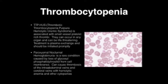Thrombotic thrombocytopenia purpura and hemolytic uremic syndrome are associated with small vessel platelet-rich thrombi. This can occur in any organ and can be life-threatening. Treatment is plasma exchange and should be initiated promptly.